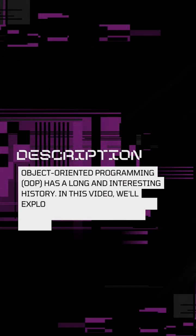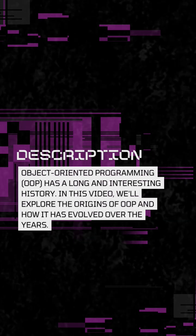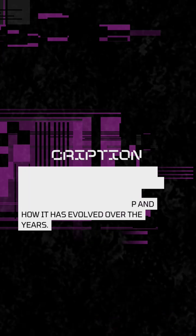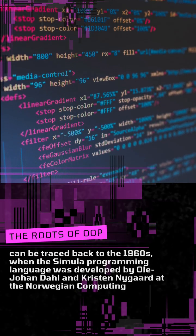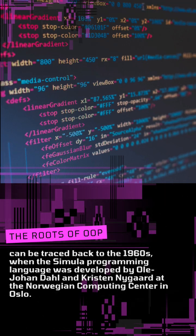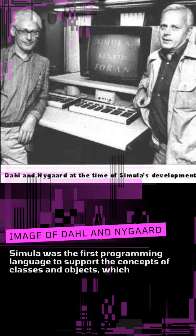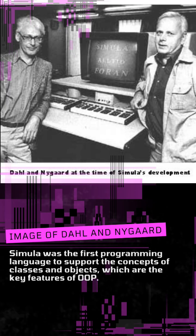Object Oriented Programming has a long and interesting history. In this video, we'll explore the origins of OOP and how it has evolved over the years. The roots of OOP can be traced back to the 1960s, when the Simula programming language was developed by Ole Johan Dahl and Kristen Nygaard at the Norwegian Computing Center in Oslo. Simula was the first programming language to support the concepts of classes and objects, which are the key features of OOP.